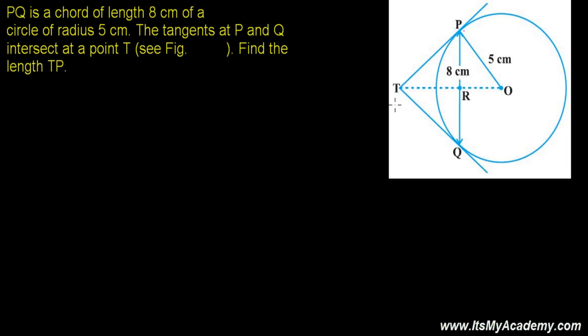We have already learned that from an external point, whenever you draw two tangents, the total possible tangents are two, and both of those tangents are equal.